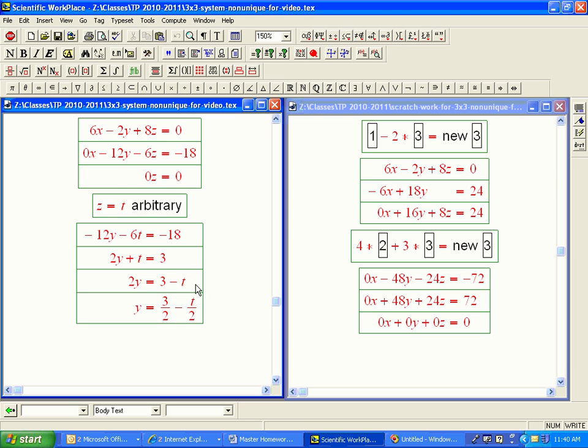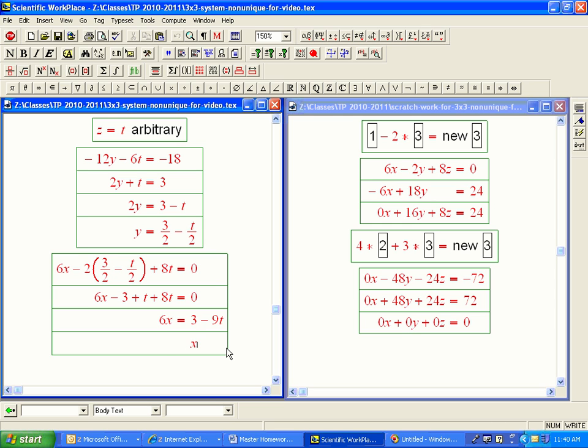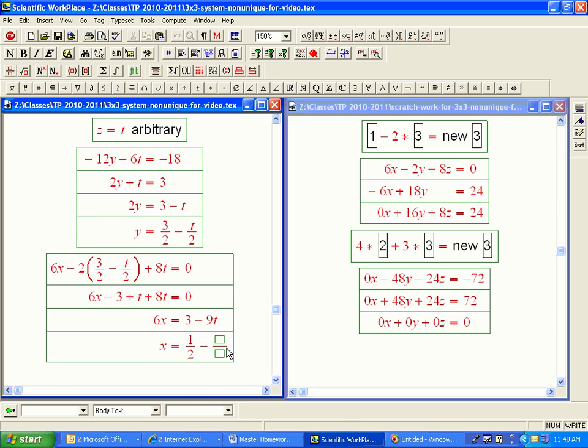And then the x equation, you can see it just right at the top here. Let's just copy that in so I don't get it wrong. Okay, and now it's a little complicated. We've just got to put in everywhere we see a y, we've figured out that's this expression in terms of t. And then z, of course, is just t. Okay, so let's simplify that. We've got 6x minus, the 2's cancel, so that's 3. And then plus t plus 8t equals 0. Or 6x equals 3 minus 9t, it looks like. And so x is 1 half minus 3 halves t.